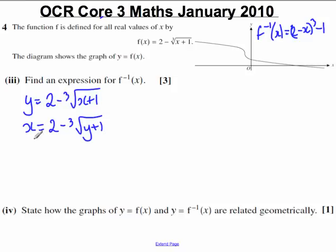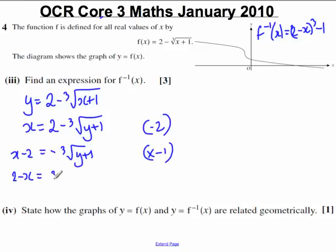So what you do is you take away 2 from both sides. So you get x minus 2 equals the negative cube root of y plus 1. Then you would times both sides by minus 1, so you would get 2 minus x equals the cube root of y plus 1. Then you would cube both sides, so you would get 2 minus x cubed equals y plus 1.